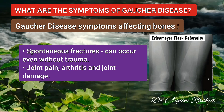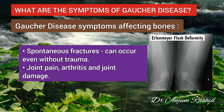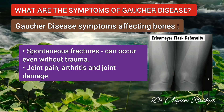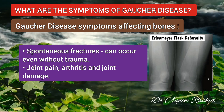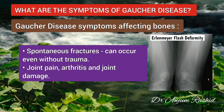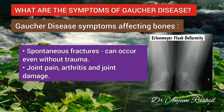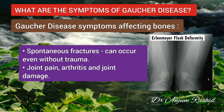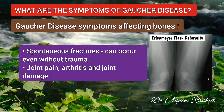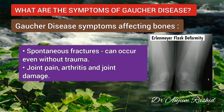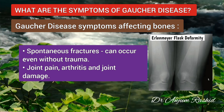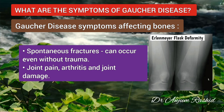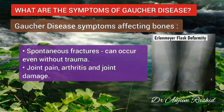Joint pain, arthritis and joint damage are also common in Gaucher disease patients. Gaucher disease can cause severe arthritis and bone damage, which can be permanent if the disease is untreated.